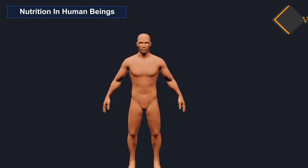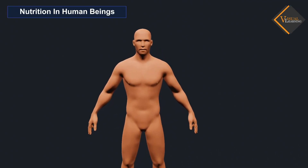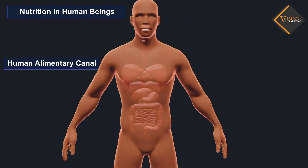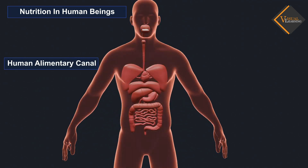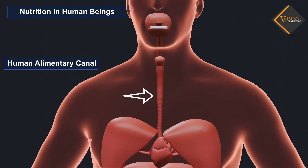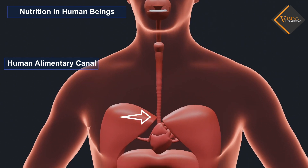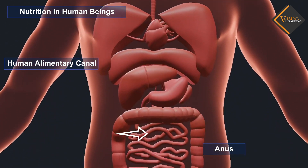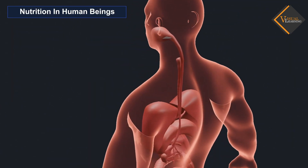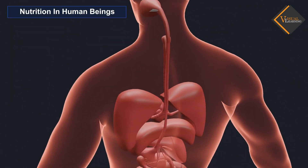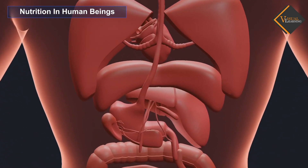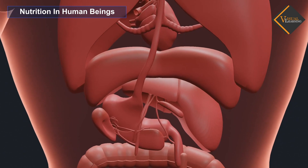In the animation, we can see a human alimentary canal. The alimentary canal is basically a long tube extending from the mouth to the anus. We can see that the tube has different parts, and various regions are specialized to perform different functions.